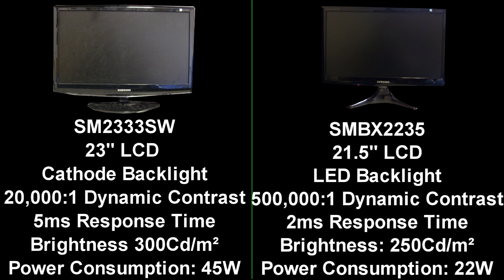This is how the monitors compare on paper — you can see the LCD monitor is on the left and the LED monitor is on the right. The LCD monitor is still using the cathode backlight, which is what's found in the old CRT monitors, you know, the ones that go back for miles and the old computers, whilst the LED monitor is using an LED backlight of course.